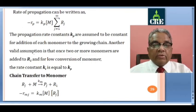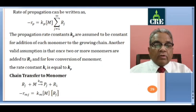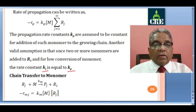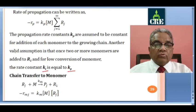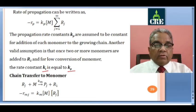Another valid assumption, verified experimentally, is that once 2 or more monomers are added (i.e., formation of R3, R4 and so on), for low conversion of monomer the rate constant K_I equals K_P. So initiation and propagation rate constants are almost equal once 2 or more monomers are added. Both are model assumptions but are verified with experimental results.